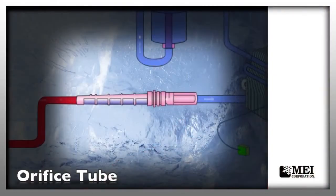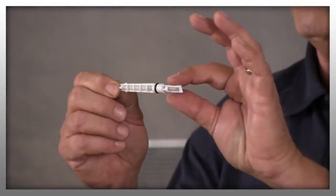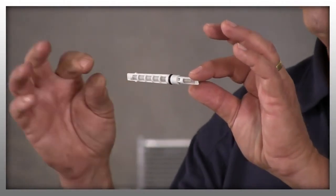Leaving the condenser, we go to our clutch cycling orifice tube, or CCOT tube. It's a little tube about the size of my little finger, stuck inside a tube leading directly into the evaporator. It changes that high temperature, high pressure liquid into a low temperature, low pressure liquid. At one point it's 20 degrees below zero. Being that it's a piece of plastic, it's very vulnerable to cracking or splitting. Often it will split and cause refrigerant to flood into the evaporator, resulting in a frozen evaporator. It is also the only screen — the only filtering — in that system, and that screen tends to plug up quickly, which will also cause your system to freeze up.